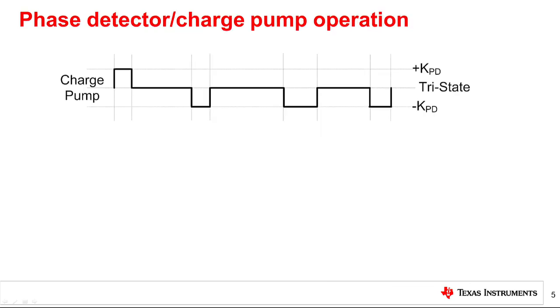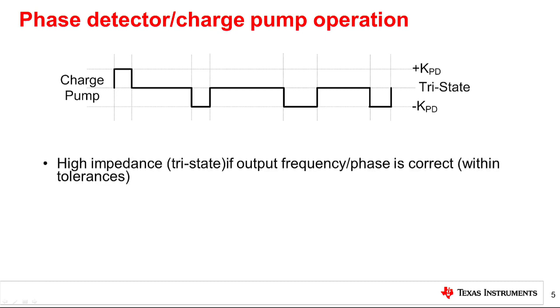If the compared frequencies are the same, then the PLL is considered to be in lock, and theoretically, the output of the charge pump should be high impedance state. In practice, there are narrow and alternating positive and negative pulses of current, with a period equal to the phase detector period.